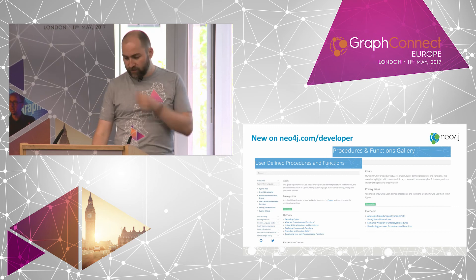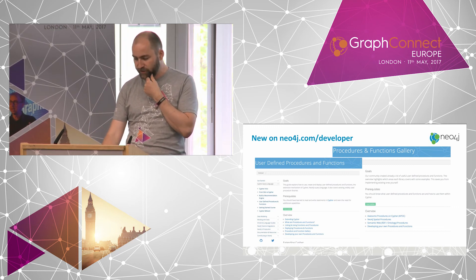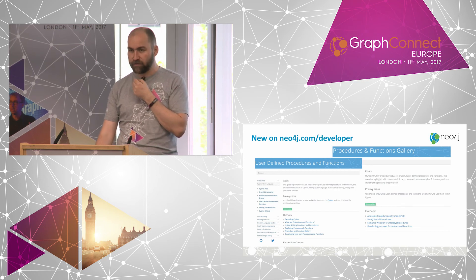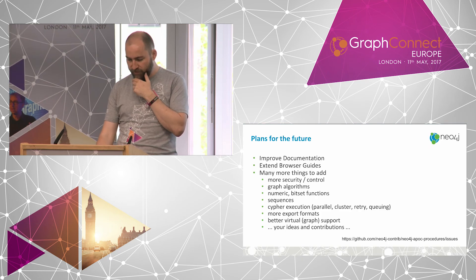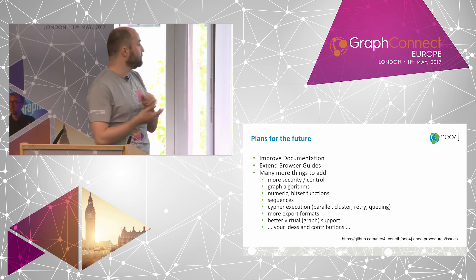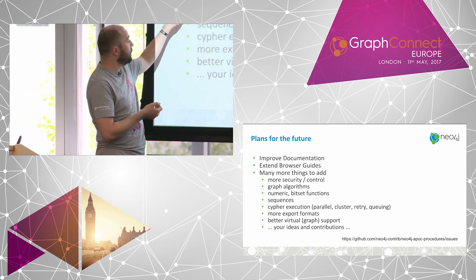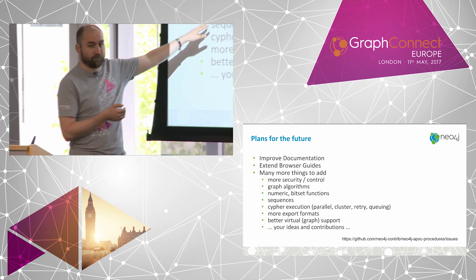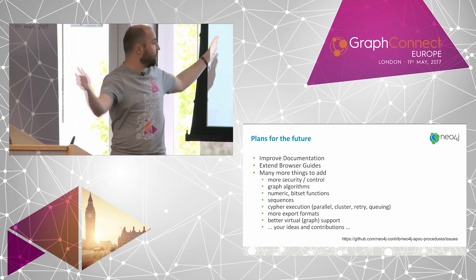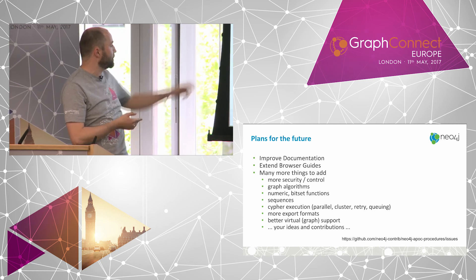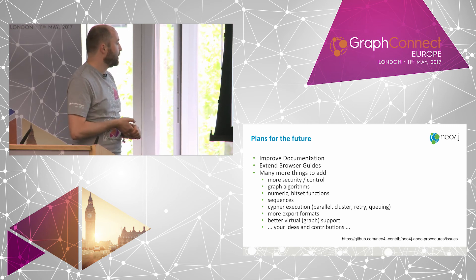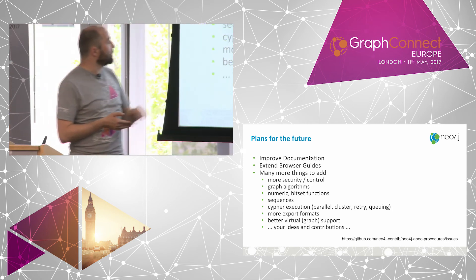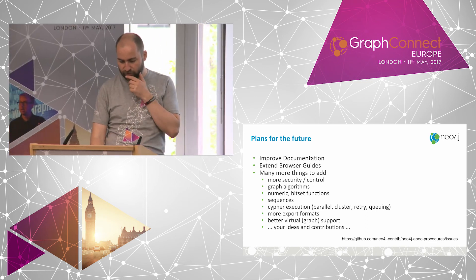We also added pages on neo4j.com/developer about procedures and functions with a detailed gallery of all available stuff — so if you want to quickly search on Google, you should find that. We want to add many more things, especially numeric functions for banking applications, large-scale operations, bit sets, sequences, parallel self-execution across the cluster, more export formats, history graph support, and so on. We have a lot of ideas.